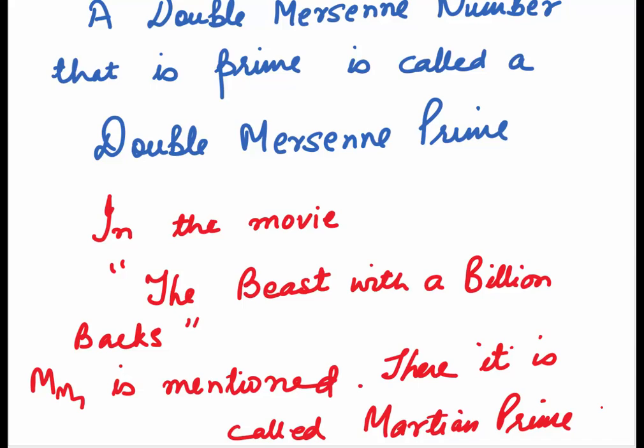Our movies also have attracted attention of these double Mersenne numbers. In the movie The Beast with a Billion Backs, MM7 is mentioned. There it is called a Martian prime. Bender refers to MM7 as the most powerful number. He says his religion revolves around this number. Of course, it's all said in a humorous way.